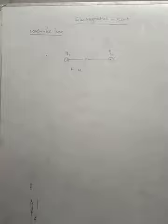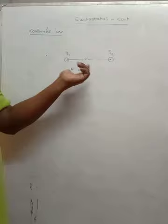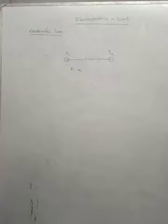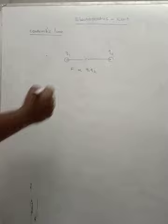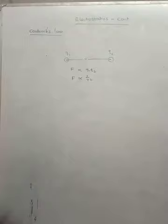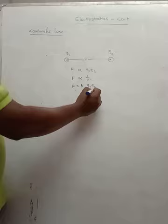If the charges are like charges, there will be a repulsive force. If the two charges are unlike charges, there will be an attractive force. So the force may be attractive or repulsive depending on whether the charges are like or unlike. The force is directly proportional to the product of the two charges — F ∝ Q1·Q2 — and inversely proportional to the square of the distance, F ∝ 1/R². Combining these two, F = K·Q1·Q2/R², where K is the proportionality constant.